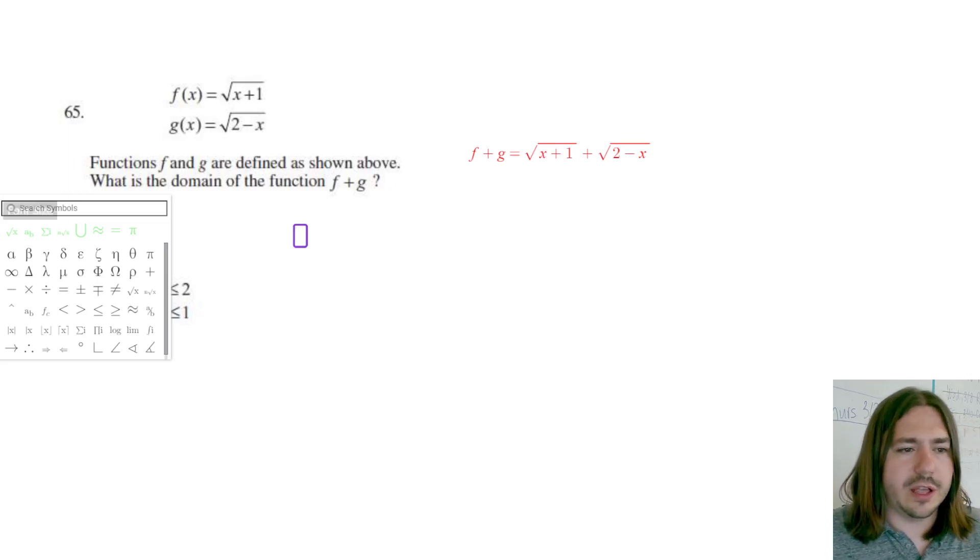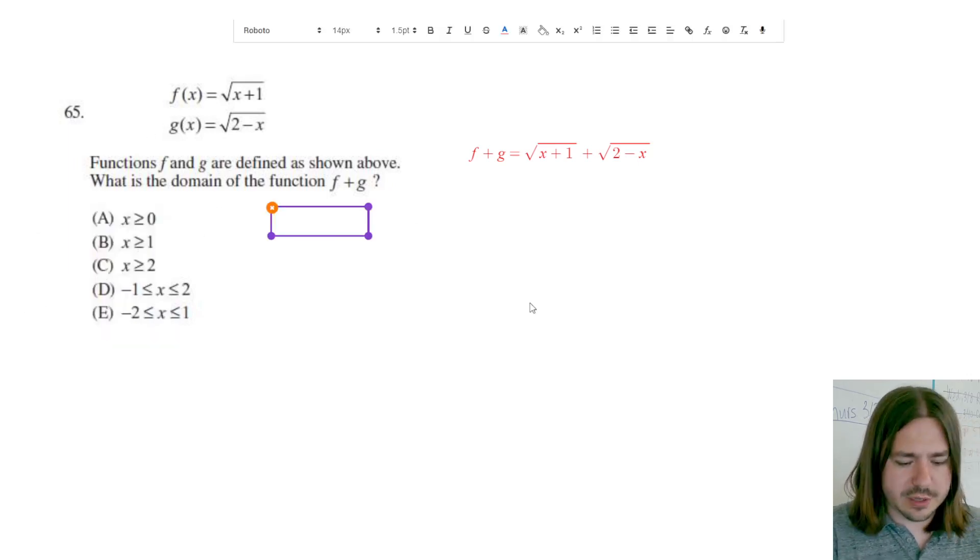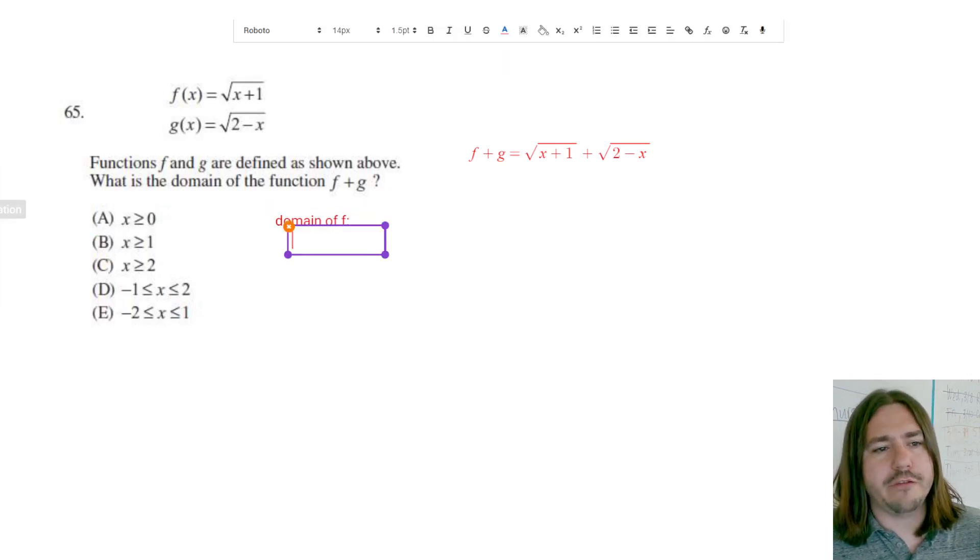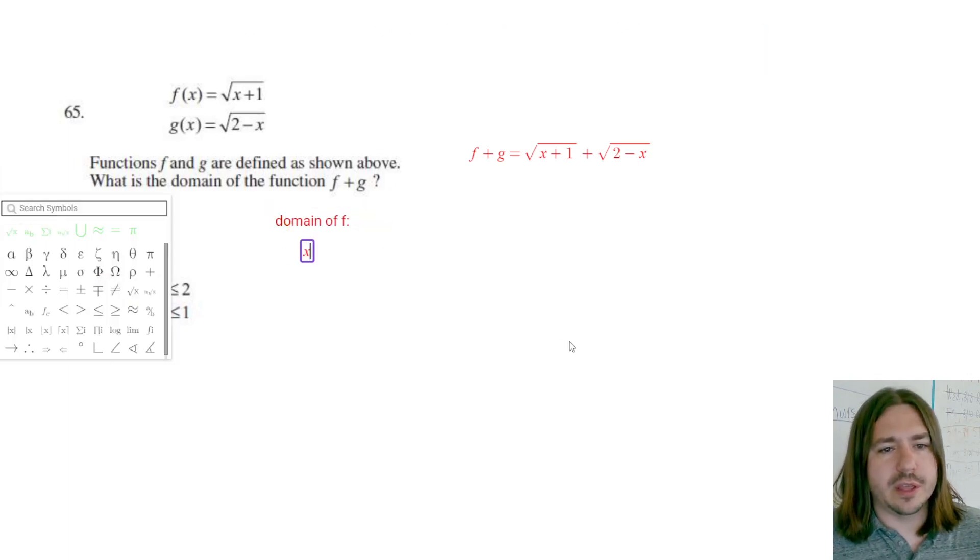Okay, so let's first find the domain of f. The domain of f is going to be all of the x values that make that expression underneath the radical bigger than or equal to 0. So if it's 0, square root of 0, 0,